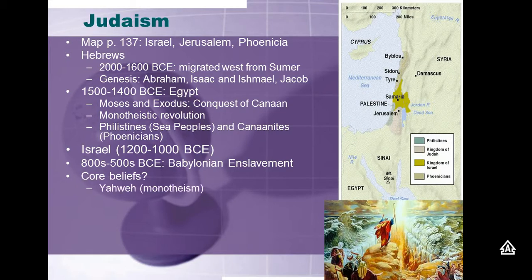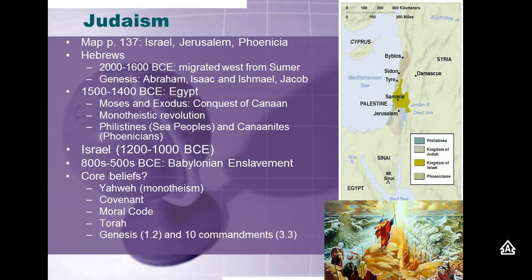In articulating their core beliefs, their God — they spell out the name Yahweh but don't say it, believing they should not speak the name of God. They believe this God made a covenant with Abraham and his descendants. In that covenant, the people of Abraham agreed to worship only one God and follow God's laws, and in exchange, God would bless them in this lifetime. In the Ten Commandments, they were given a moral code — that was document 3.3.